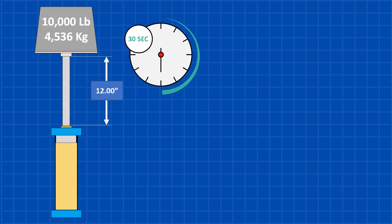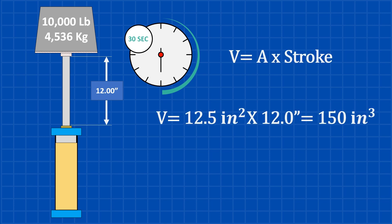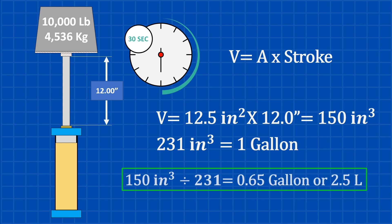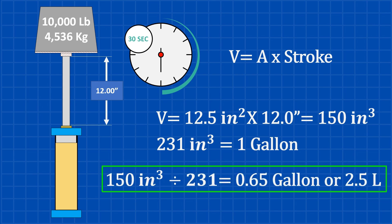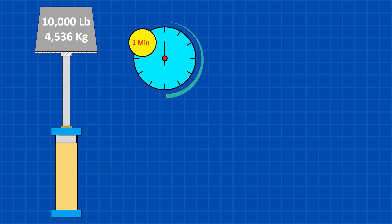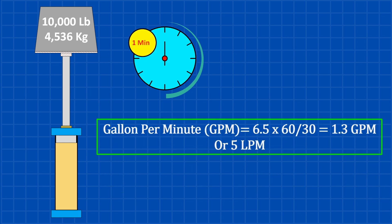To find the volume, we just multiply the area by the stroke length. Since the area is 12.5 square inches and the stroke is 12 inches, that gives us 150 cubic inches. When we convert that, it comes out to 0.65 gallons or about 2.5 liters. This volume is for 30 seconds, but to get the flow in gallons per minute, we need to double it. That gives us a flow of 1.3 GPM or 5 liters per minute.